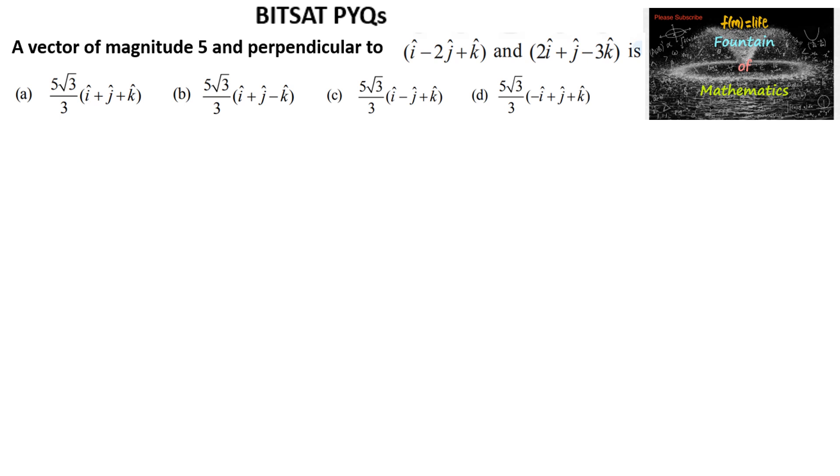We need to find a vector of magnitude 5 and perpendicular to two vectors i-2j plus k and 2i plus j minus 3k.